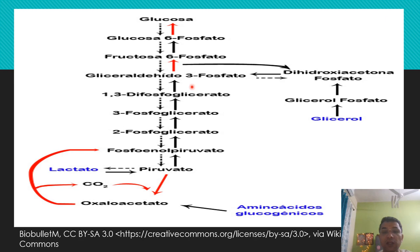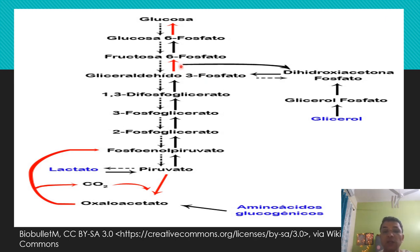Glyceraldehyde-3-phosphate and dihydroxyacetone phosphate are formed; these two molecules exist in isomer form. After this, fructose-1,6-bisphosphate is produced, then fructose-6-phosphate, and proceeding toward glucose-6-phosphate.